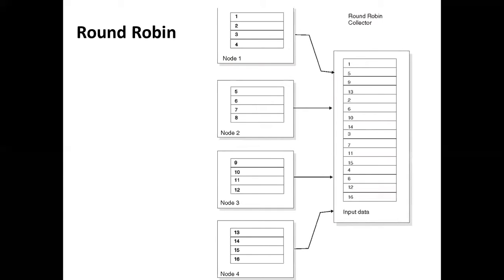A sequential file has no parallelism. So all the data coming in from multiple streams from the previous stages has to be collected into a single stream and put into a sequential file. If it doesn't really matter what order the data is in the output file, we can just let it be auto. Most of the time the auto method would be round robin, and the data would be written to your target file. But if there is a specific requirement to have data in a certain order, then we can specify collecting methods as well.